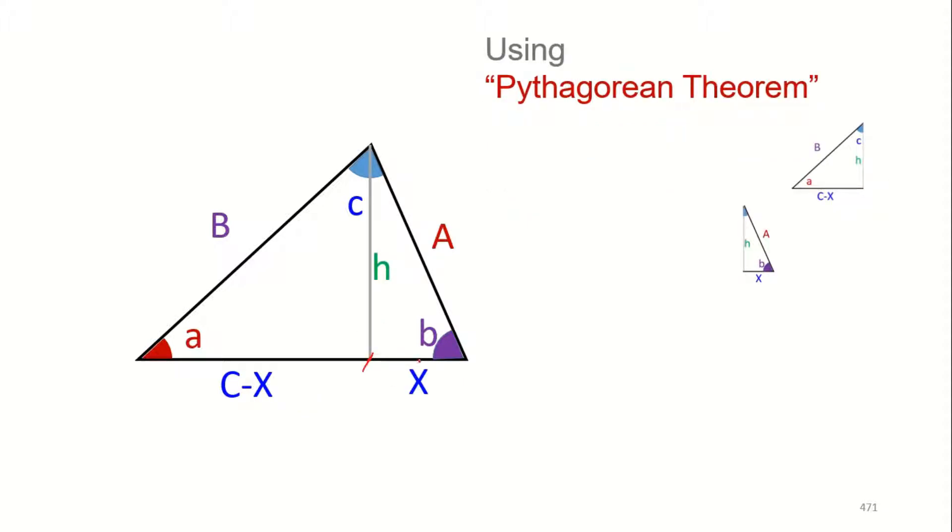If we call this x, obviously this will become C minus x. And now we can split this triangle just for the sake of it into two. One triangle has h, B, and C minus x. One is this type and one triangle is the other type. Let's see their Pythagorean relationships - this square plus this square must be this square, and this square plus this square must be this square. Pythagoras is our old friend, so that's how we can apply it, very simple.